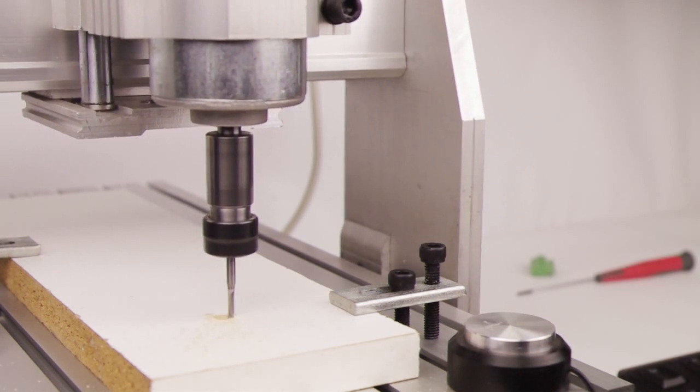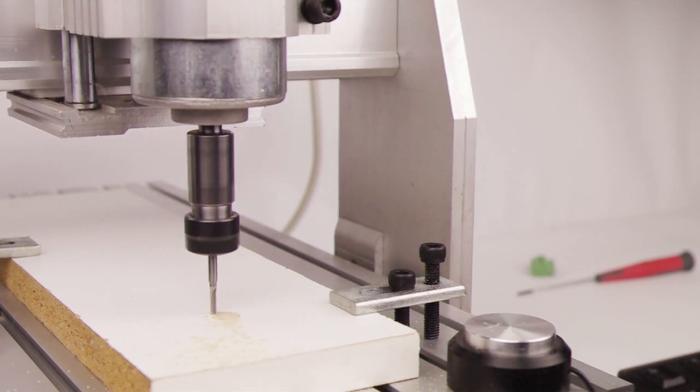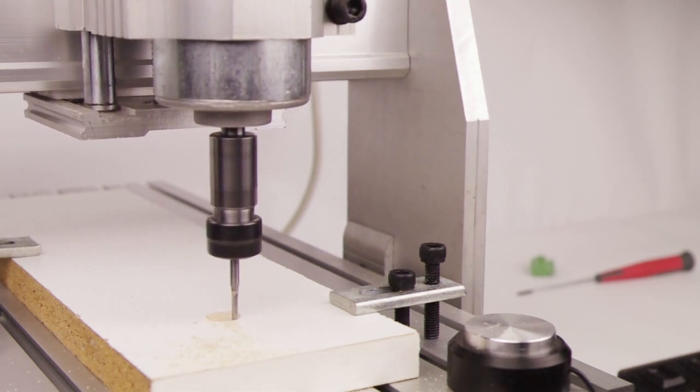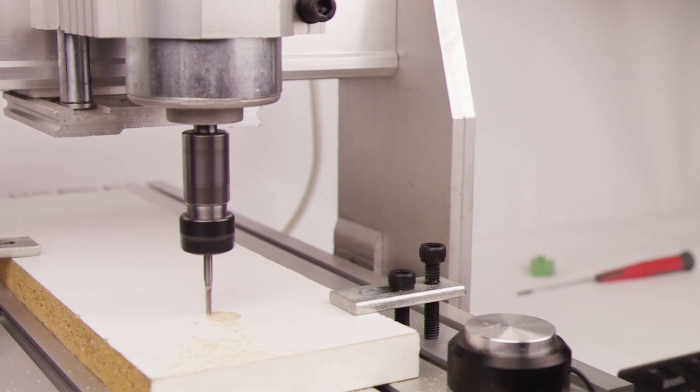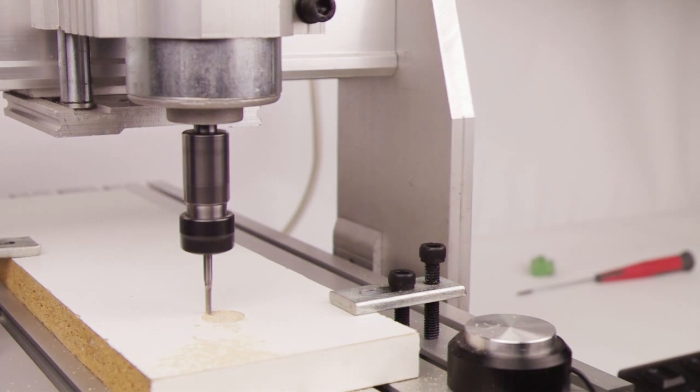That was a quick video to give you an idea on how to set up and use the automatic tool zero feature. With this feature it becomes really easy to change and calibrate your tools. You can find more information on our website hightechnology.com. Thanks for watching.